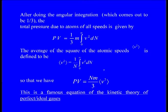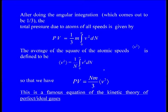We have PV equal to n capital M — which is the total number of atoms or molecules times mass m — divided by 3, into the root mean square velocity. This is the famous equation of the kinetic theory of perfect or ideal gases.